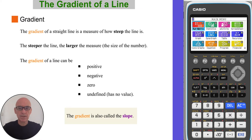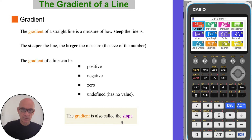The gradient of a straight line is a measure of how steep the line is. The steeper the line, the larger the size of the number. The gradient is also called the slope.